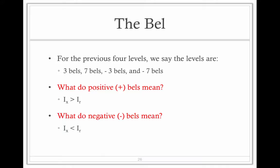So for our previous four levels, we have 3 bells, 7 bells, negative 3 bells, and negative 7 bells. If it's positive, the absolute is greater than the reference. If it's negative, the absolute is less than the reference.